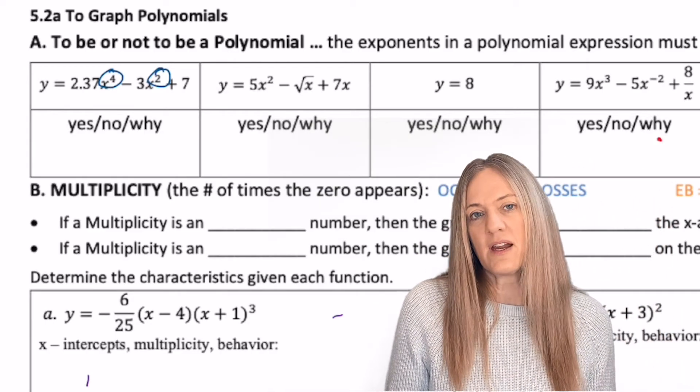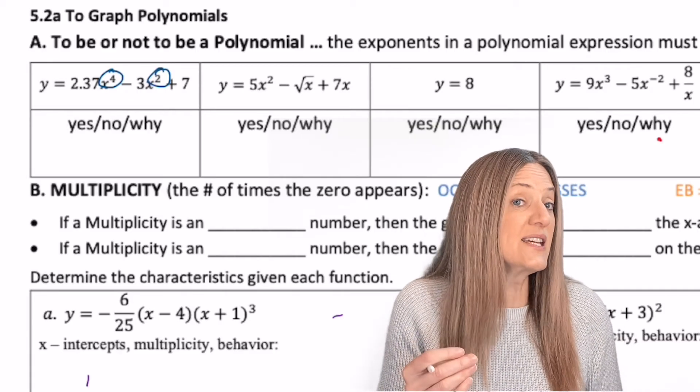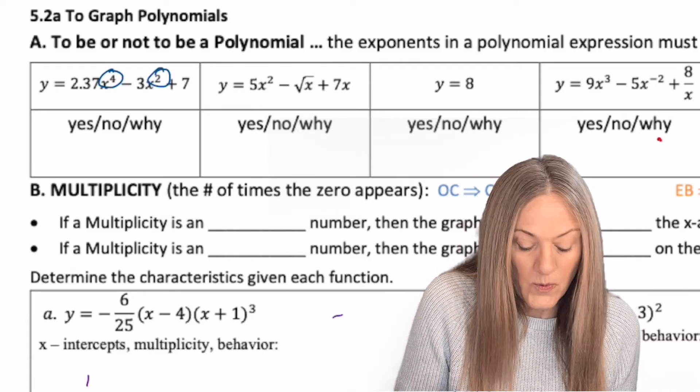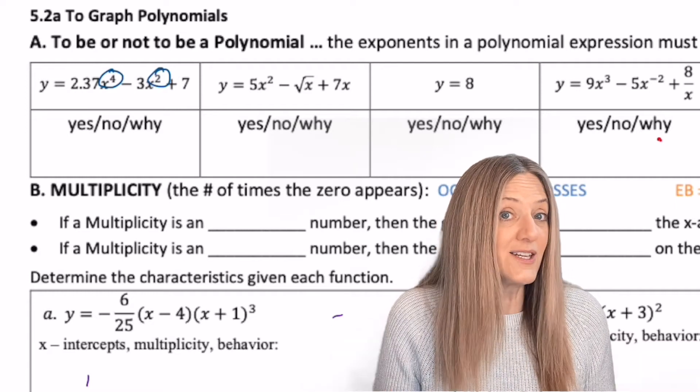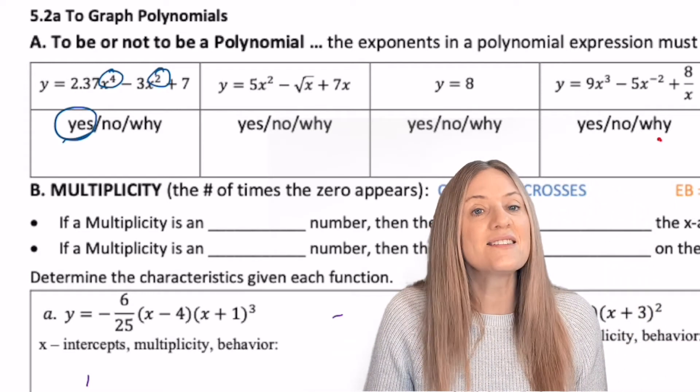Is there an exponent there? Well, technically we could say there is because it could be 7 times x to the 0, and anything to the 0 power is 1, but we typically don't write that. 4 and 2 are positive integer exponents, therefore, yes, this first one is a polynomial.